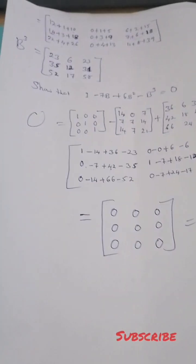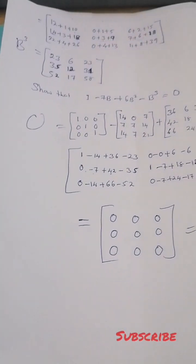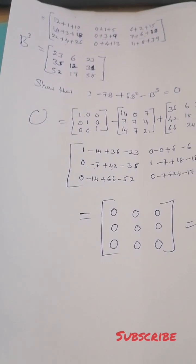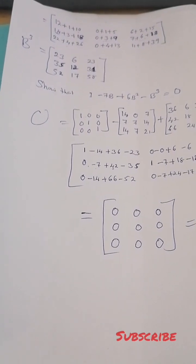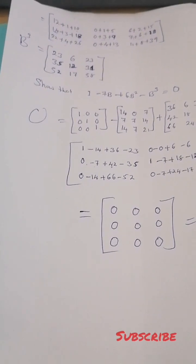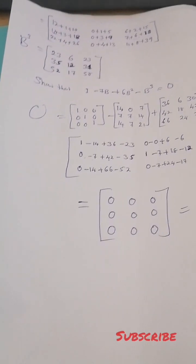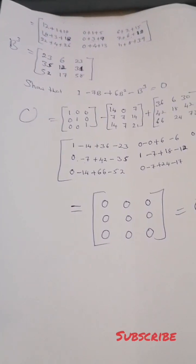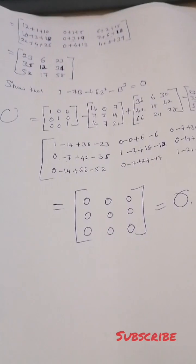When you multiply those matrices, you are going to get B cubed equals 23, 6, 23, 35, 12, 31, 52, 17, 58.